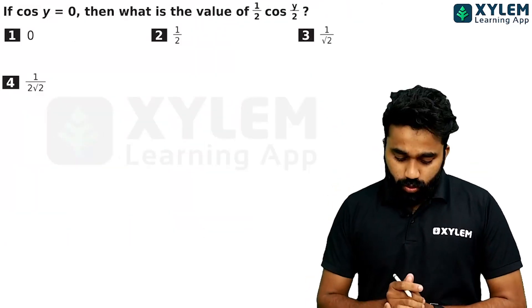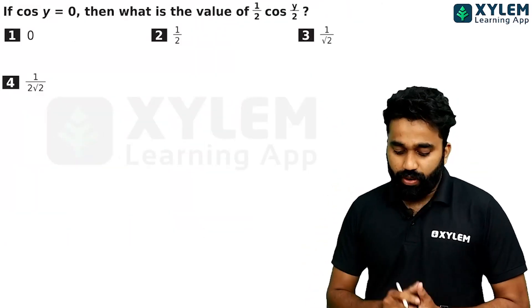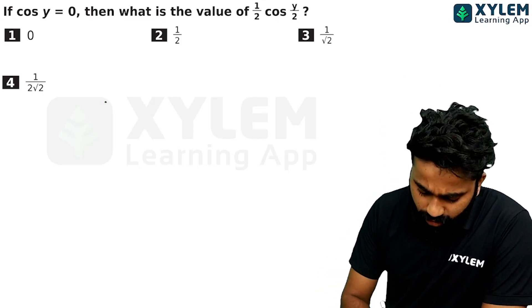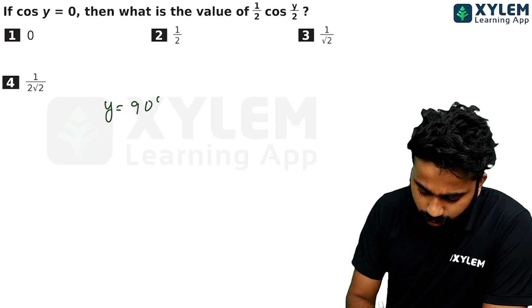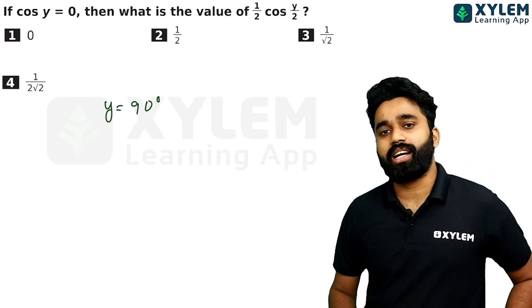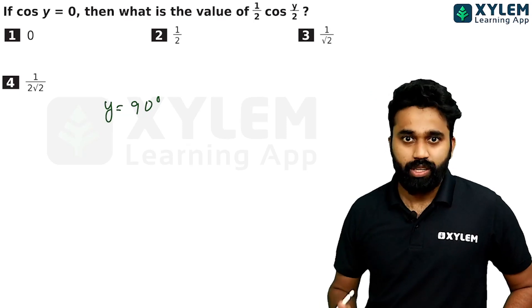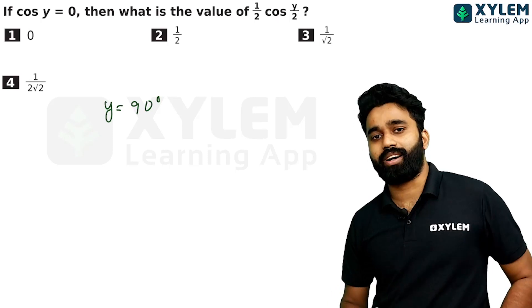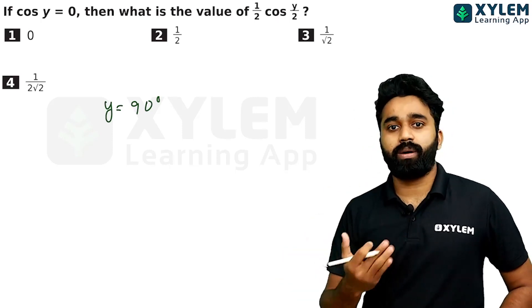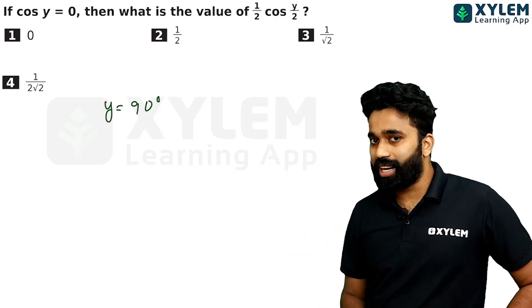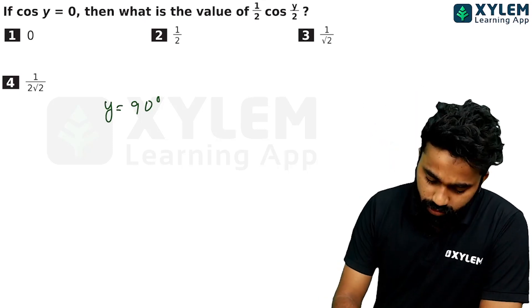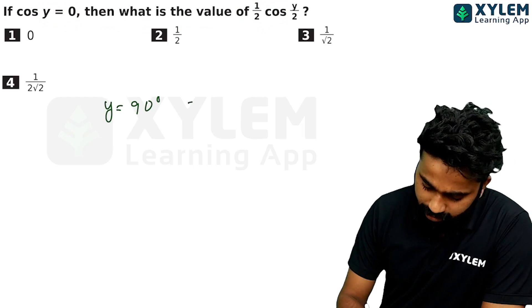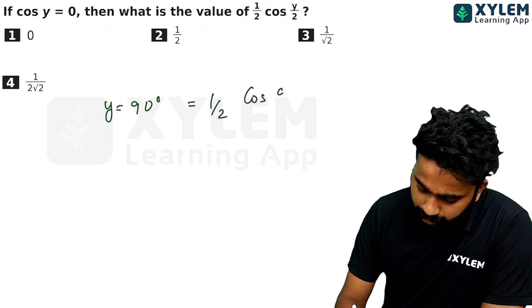If cos y is equal to 0, then what is the value of half cos y by 2? It's a very simple question. If cos y is equal to 0, then simply y is equal to 90 degrees, because cos 90 is equal to 0. So half into cos y by 2 equals half times cos 90 by 2.